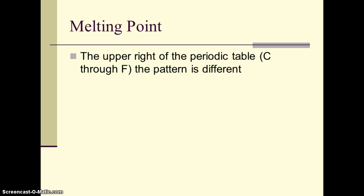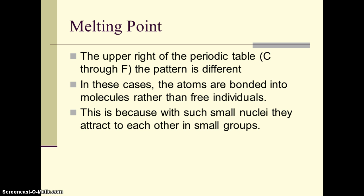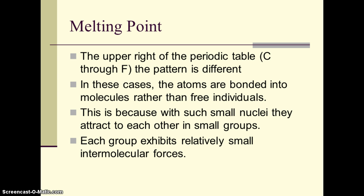Now in the upper right of the periodic table, carbon through fluorine, we have a little different pattern. These atoms tend to be bonded in molecules rather than as free individuals. With really small nuclei, they will bond to each other in small groups very readily. So each group exhibits a relatively small intermolecular force. Each one of those is probably bonded to itself, like two fluorines F2, or a group of carbons to each other. So they tend to have fairly weak intermolecular forces compared to metals.